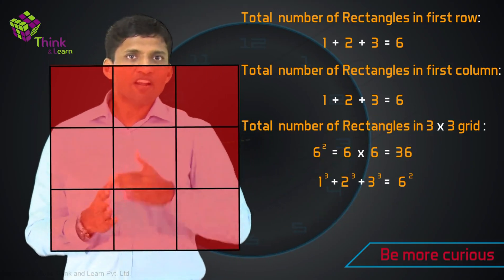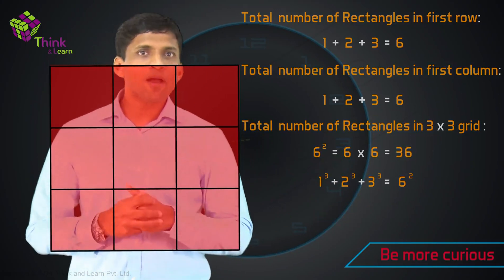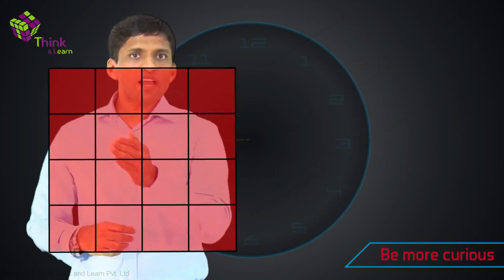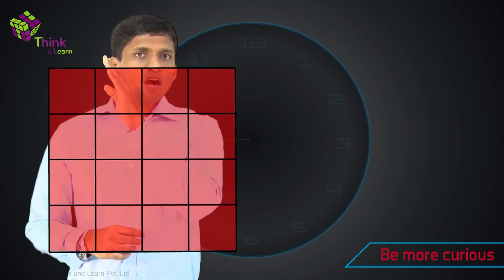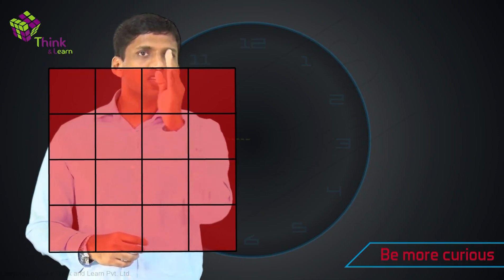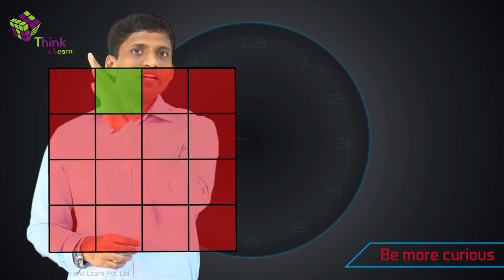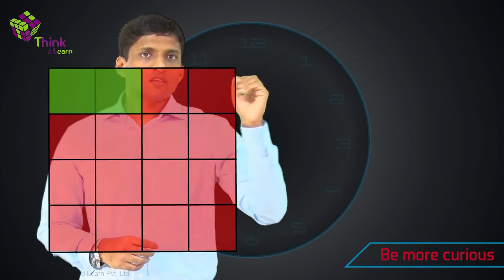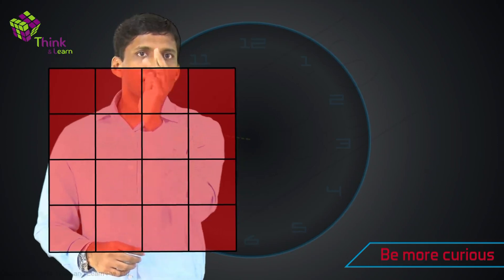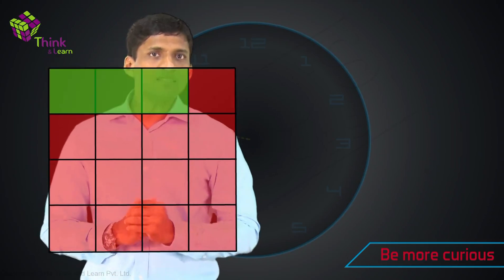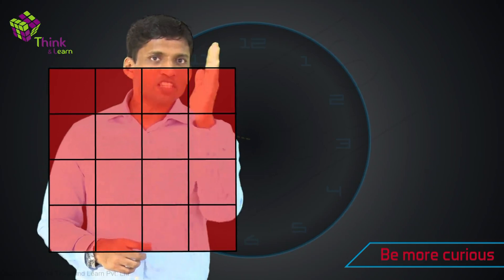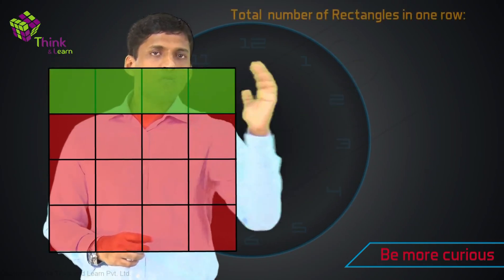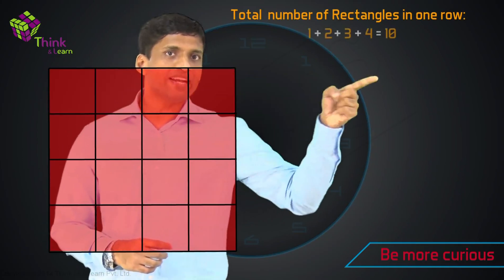Let's do this for a 4 by 4 grid. In the first row: how many 1 by 1 rectangles? It's 1, 2, 3, 4. How many 2 by 1? It's 1, 2, 3. How many 3 by 1? It's 1 and 2, as highlighted. How many 4 by 1? Just 1. So the total number of rectangles in this row is 1 plus 2 plus 3 plus 4, which equals 10.